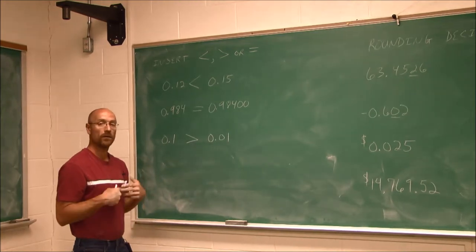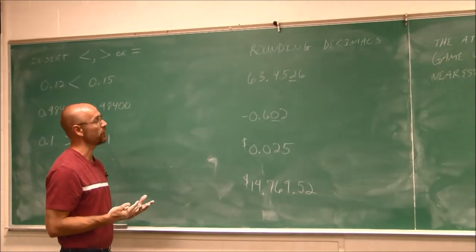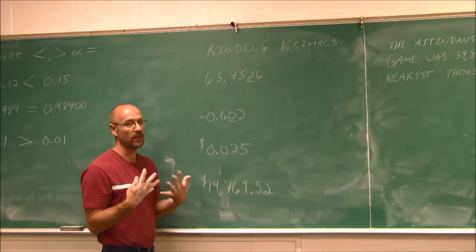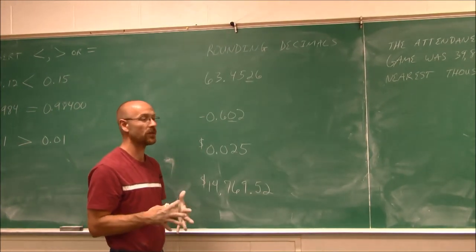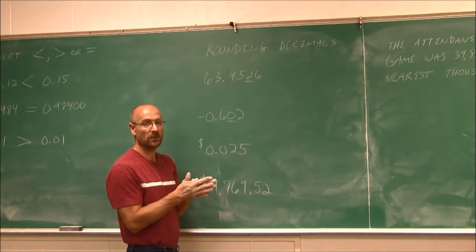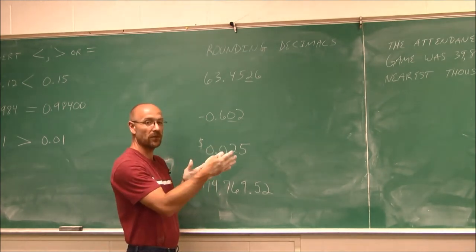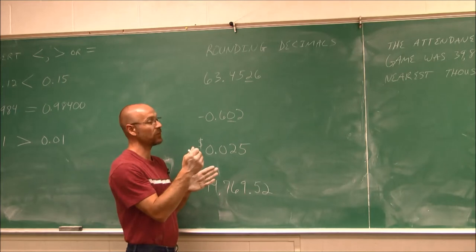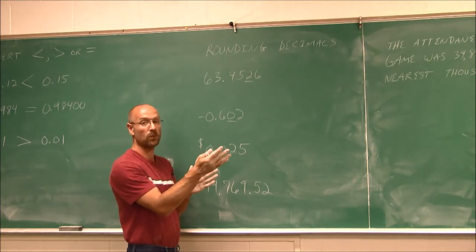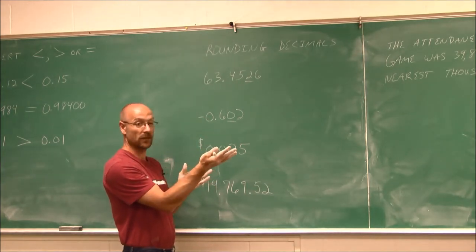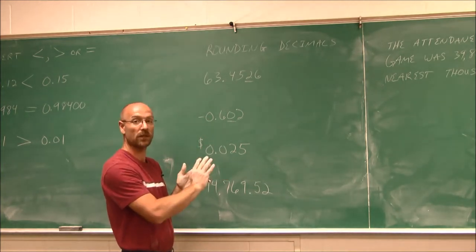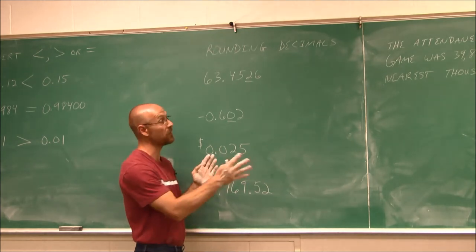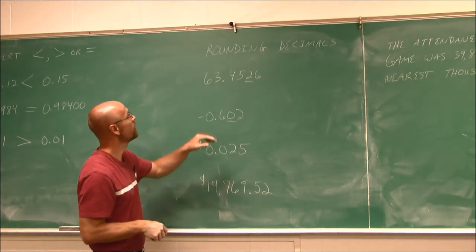The next thing we're going to look at is rounding. When it comes to rounding decimals, we use the same rounding rules as before. We look to one value to the right of the digit we want to round. If it's 5 or greater, we round up. If it's less than 5, we round it off — just eliminate the values to the right.